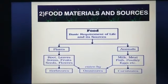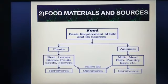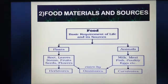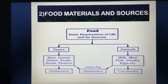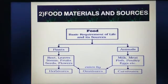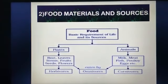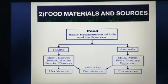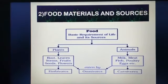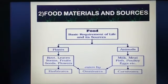Now let us discuss about the food materials and their sources. Basically, there are two major sources of food — they are plants and animals. The examples of plant sources are roots, leaves, stems, fruits, seeds, flowers, etc.